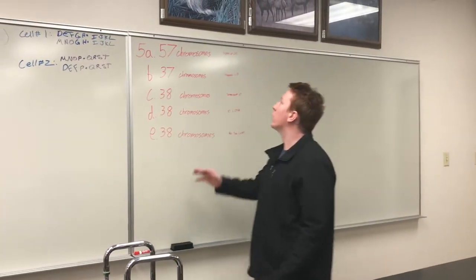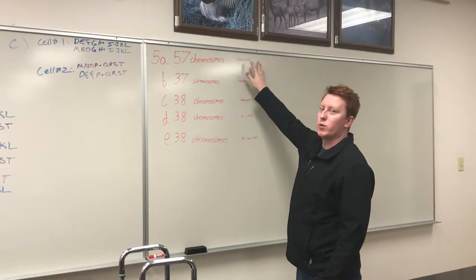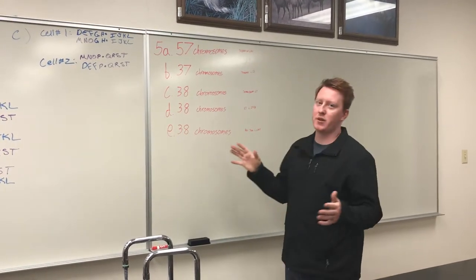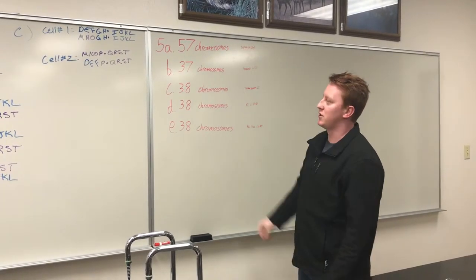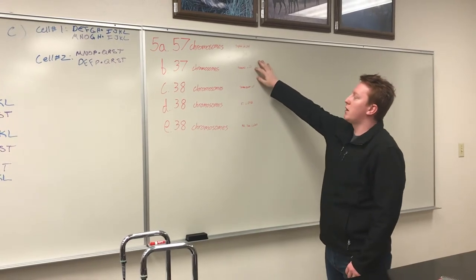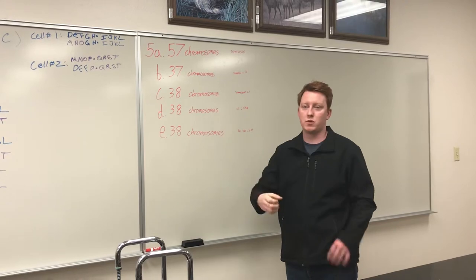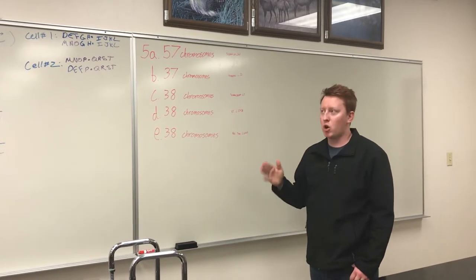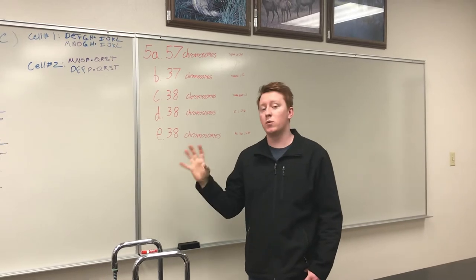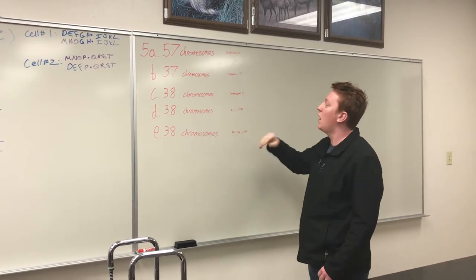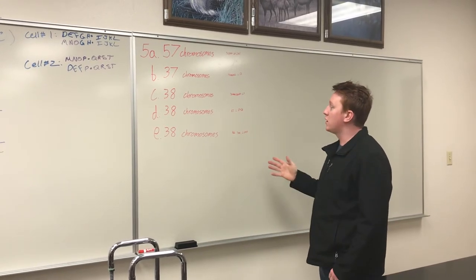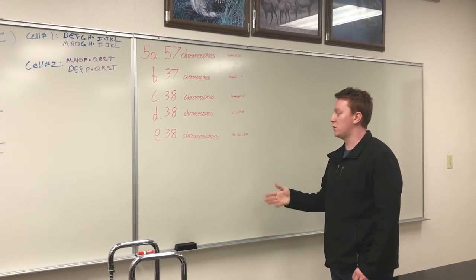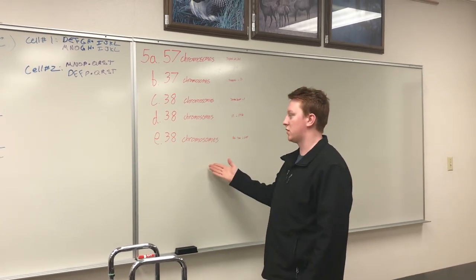For number 5, part A, we're looking at a triploid cat. Its original chromosome number was 19, so you take the diploid number of 38, cut that in half — that's your n value — then multiply by 3 to get 57 chromosomes. Part B had a monosomic error on chromosome 12, so one chromosome was lost on disjunction, resulting in 37 chromosomes. Part C has terminal deletion of chromosome 7, which doesn't remove the whole chromosome but does remove part of it, so we stay at 38 chromosomes. Part D had Robertsonian translocation on chromosomes 17 and 18 — still 38 chromosomes. For reciprocal translocation on chromosomes 6 and 9, same thing: no chromosomes are removed, so still 38 chromosomes.